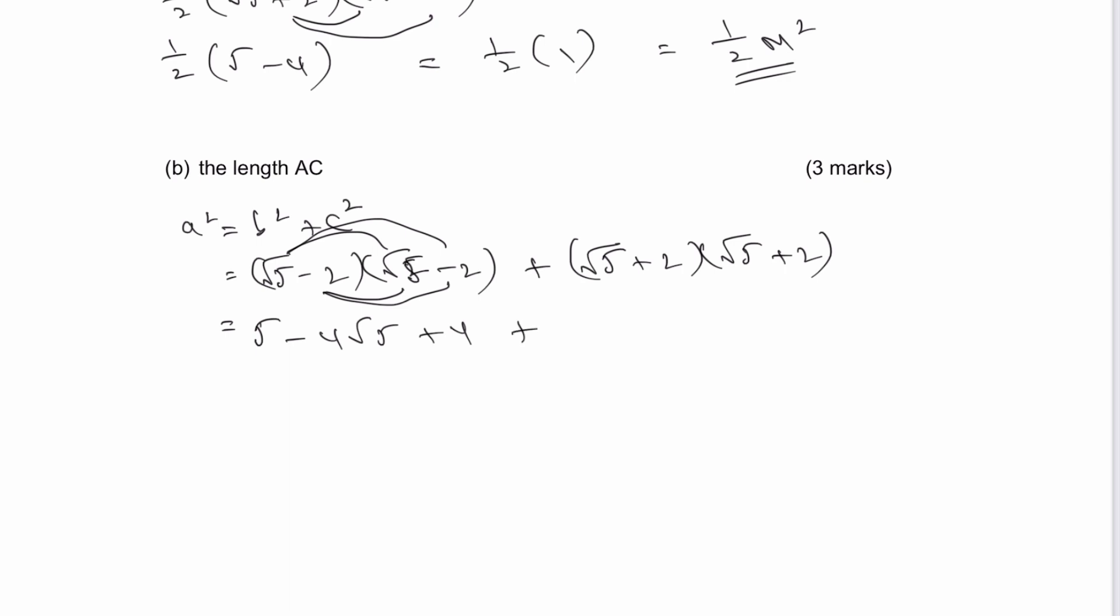So let's have a look at the next set of brackets. So root 5 times root 5, well, we've already worked out that's going to be 5. Now, this time I've got plus 2 root 5 plus 2 root 5 is plus 4 root 5, and then 2 times 2 is going to be positive 4.